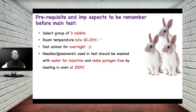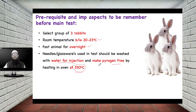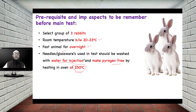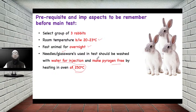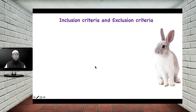The needles and glassware used to conduct this test should first be washed with water for injection, then made pyrogen-free by heating in an oven at 250 degrees Celsius. This is important because we are conducting a pyrogen test — your formulation might be pyrogen-free, but the needles or glassware you are using may be contaminated with bacteria. To ensure that the equipment is not a source of contamination, you sterilize by washing with water for injection and then heating at 250 degrees Celsius.